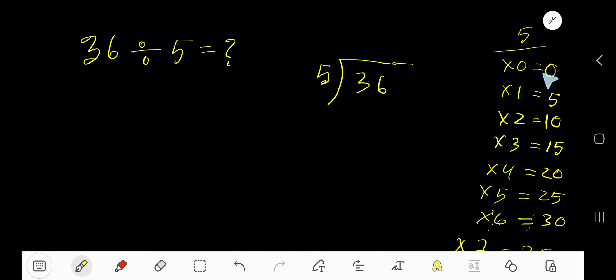To find out the multiplication table of 5, just add 5 with the previous step. 0 plus 5, 5. 5 plus 5, 10. 10 plus 5, 15. 15 plus 5, 20. 20 plus 5, 25. 25 plus 5, 30.